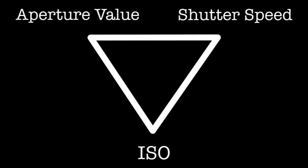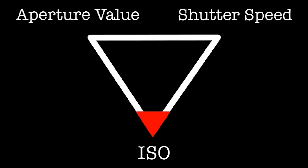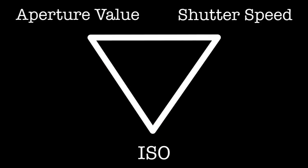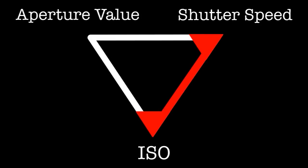For example, you can enter the ISO and the shutter speed, and when you take a reading the meter will give you the correct aperture value. Or you can enter the ISO and the aperture value, and the meter will give you the correct shutter speed. If you're metering studio strobes, you'll always enter the ISO and the shutter speed, and the meter will give you the correct aperture value. Using a meter is very simple — just remember: enter two parts of the exposure triangle, and the meter gives you the third.